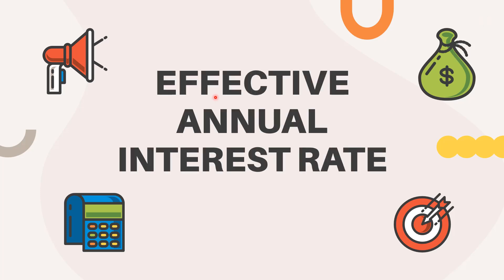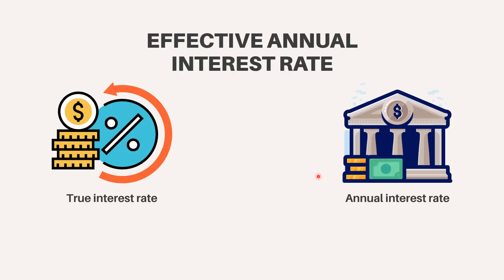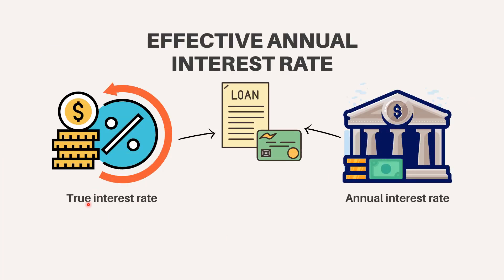An effective annual interest rate is the real return on a savings account or any interest-paying investment when the effects of compounding over time are taken into account. It also reflects the real percentage rate owed in interest on a loan, a credit card, or any other debt. It is also called the effective interest rate, the effective rate, or the annual equivalent rate.